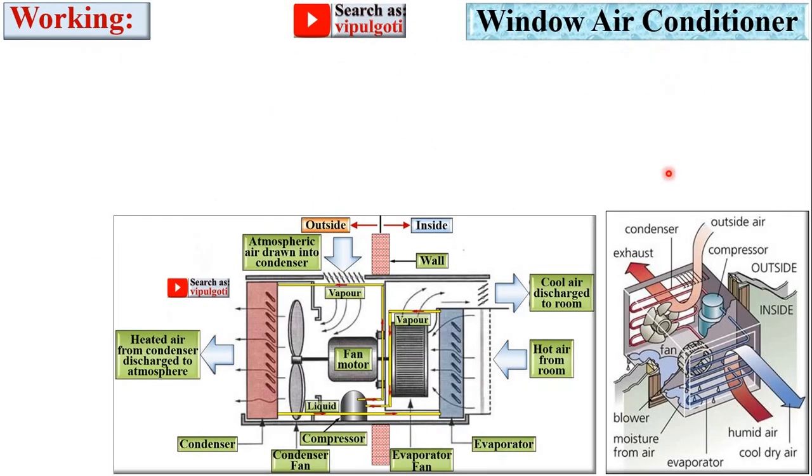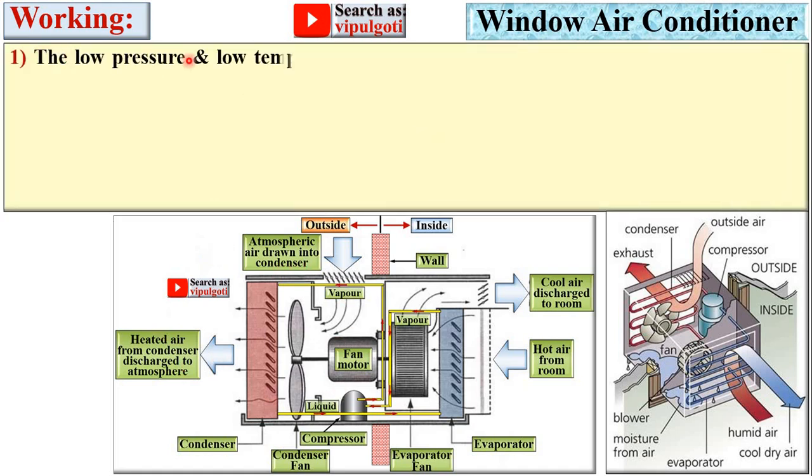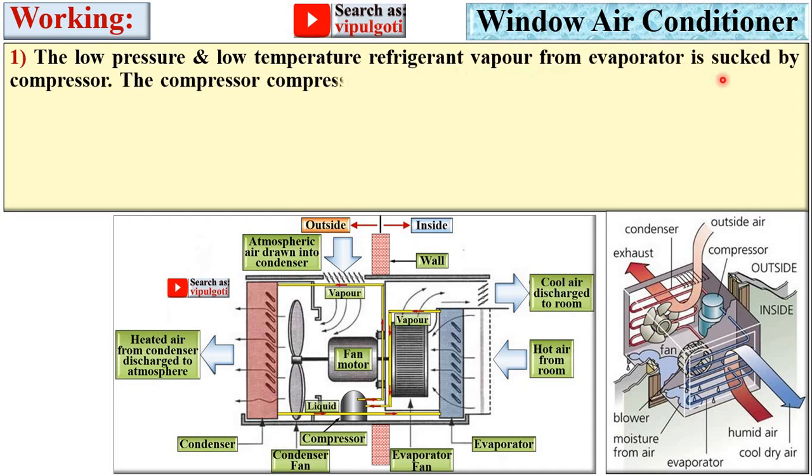Now next, working of window air conditioner. And here you can see this is the wall, so that this is the inside portion and this one is the outside portion. The low pressure and low temperature refrigerant vapor from the evaporator is sucked by compressor. So here you can see the compressor.